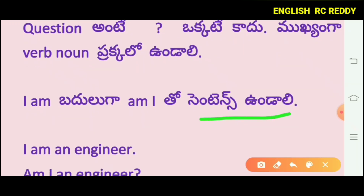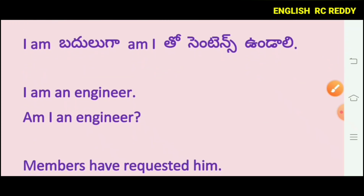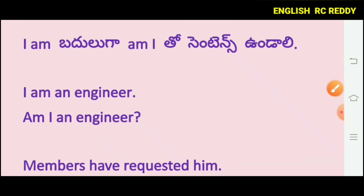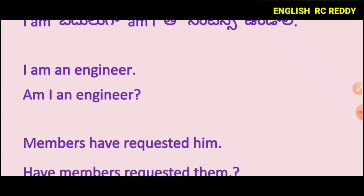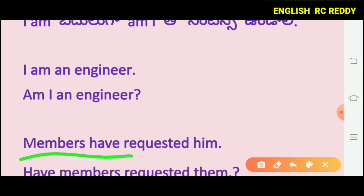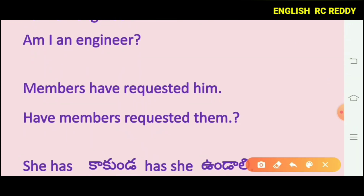For example, 'Members have requested him' is a common assertive sentence. When you see a question mark at the end, it becomes an interrogative sentence. The subject comes before the verb in a normal sentence: subject plus verb. To make it interrogative, you bring the helping verb to the front: 'Have members requested him?' You can mark it as an interrogative sentence.